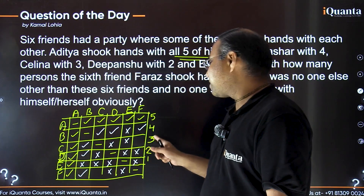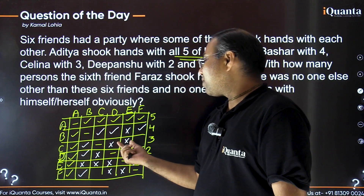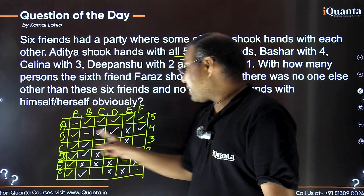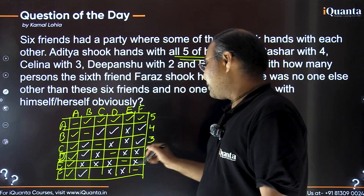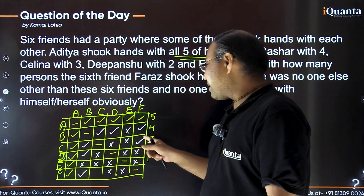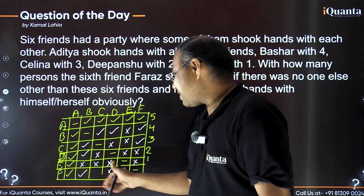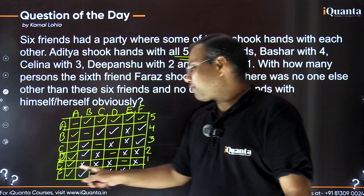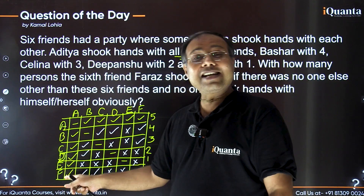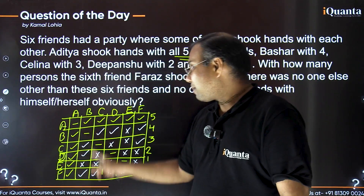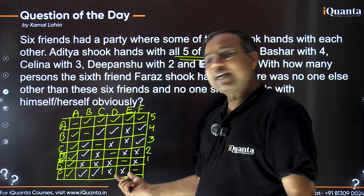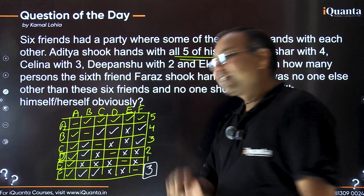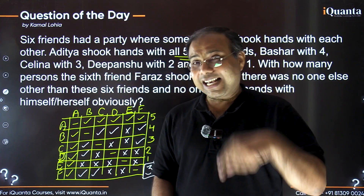Dipansha (D) needed two handshakes, both already identified: with Aditya and Basha. So Dipansha did NOT shake hands with Selena or Faraz — crosses go there. Now Selena (C) needs three handshakes; two are identified and two persons are denied, leaving only one empty box — which must be Faraz. So Selena shook hands with Faraz. Counting Faraz's column: handshakes with Aditya, Basha, and Selena — the answer is 3.